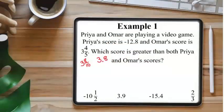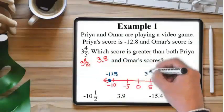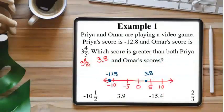Now, since we have them both in decimal form, let's put them on the number line. Negative 12.8 would go here, and 3.8 would go here. Since I'm looking for a score greater than both, I'm looking for an answer choice that would be to the right of 3.8 on a number line.